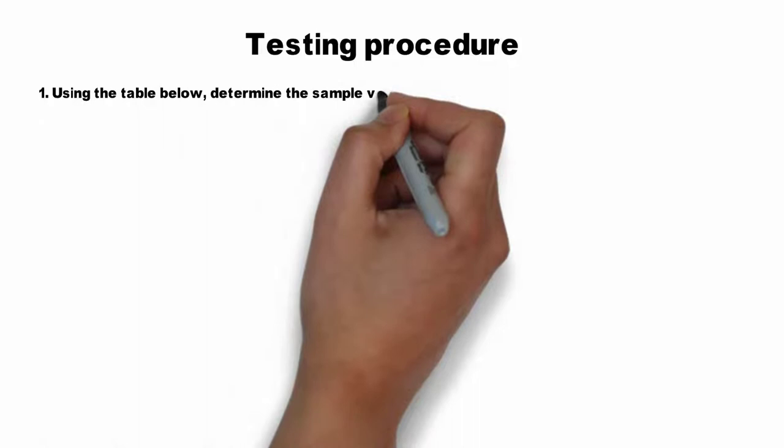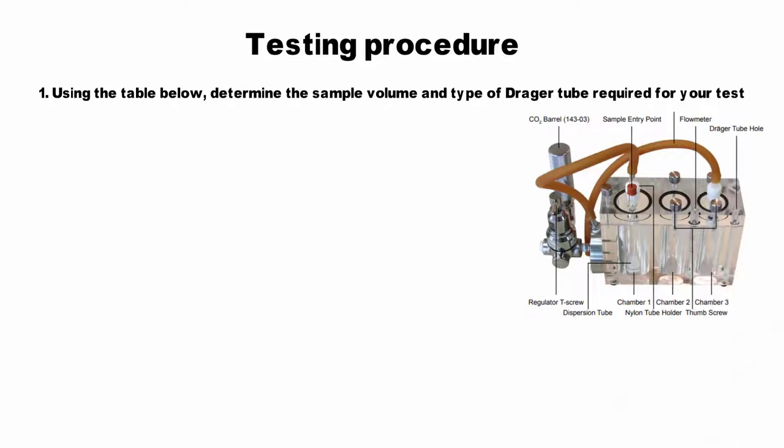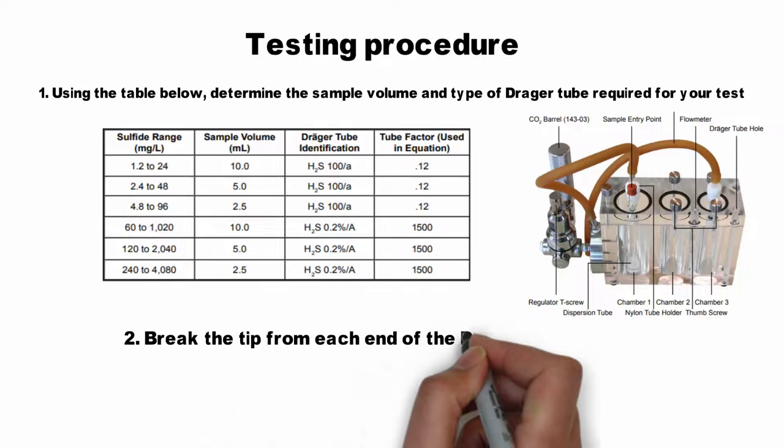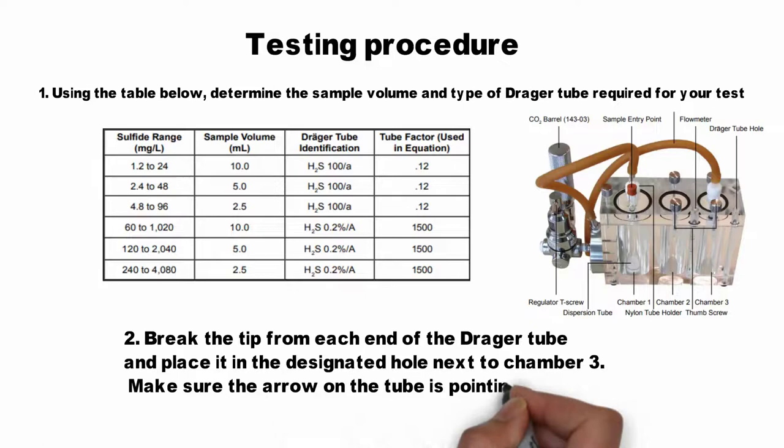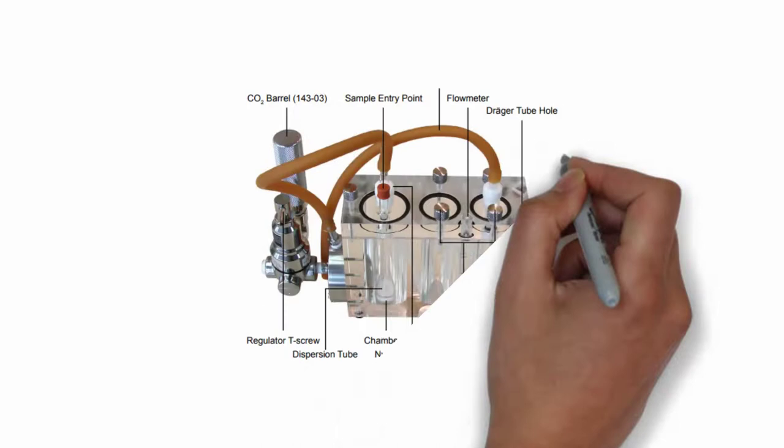For the testing procedure, using the table below you can determine the sample volume and the type of Draeger tubes required for your test. Break the tip from each end of the Draeger tubes and place them in the designated hole next to chamber 3, making sure the arrow on the tube is pointing downward and that the O-ring seals around the tube. Next, connect the rubber hose from chamber 3 to the Draeger tube.